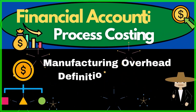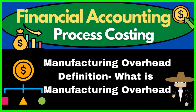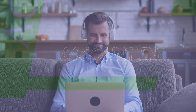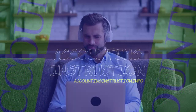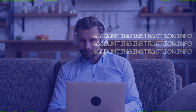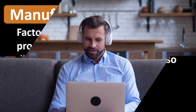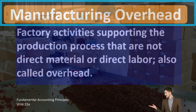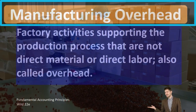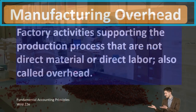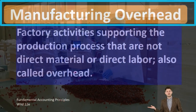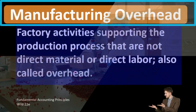In this lecture we will define manufacturing overhead. According to Fundamental Accounting Principles, WILD 22nd Edition, the definition of manufacturing overhead is factory activities supporting the production process that are not direct materials or direct labor, also called overhead.